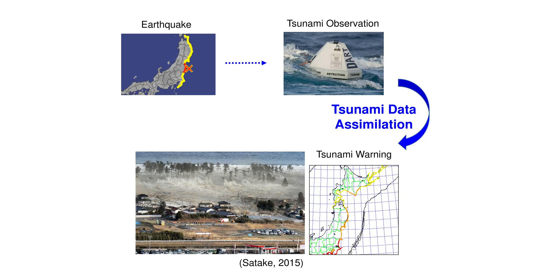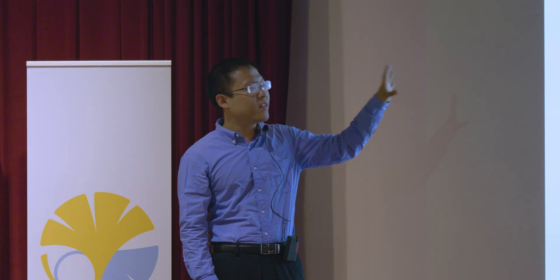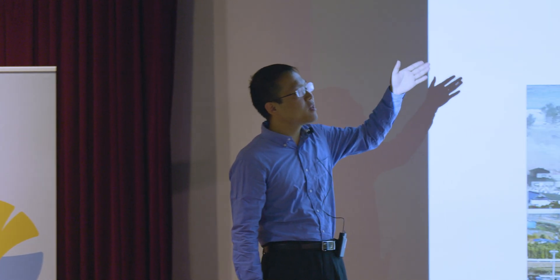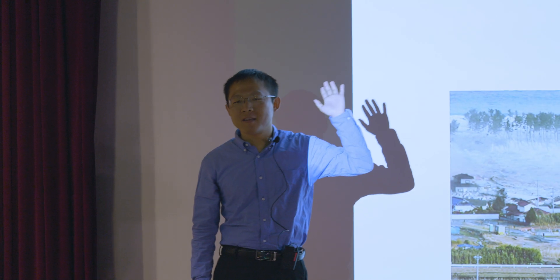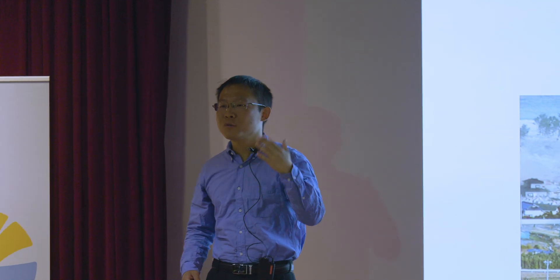The signal is sent via satellite or cable to land so we know what the tsunami height is. After an earthquake happens, the tsunami will soon be detected by these sensors. Because there is still a time window between tsunami detection and tsunami arrival, as the tsunami travels very fast, it is very necessary to use this valuable time to provide tsunami forecasting.